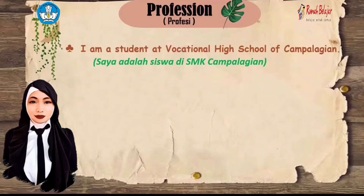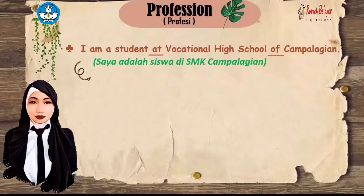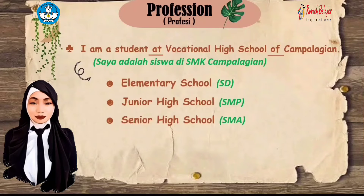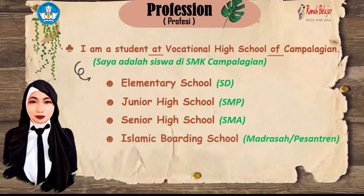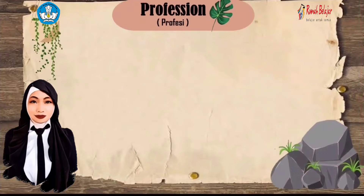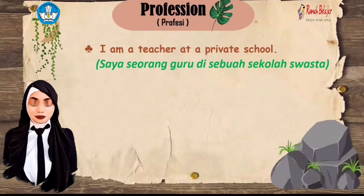Next, share about your profession. If you are a student, you can say: 'I am a student at Vocational High School of Campalagian.' Here are the names of education levels in English: Elementary School (SD), Junior High School (SMP), Senior High School (SMA), Islamic Boarding School (madrasah/pesantren), and University.